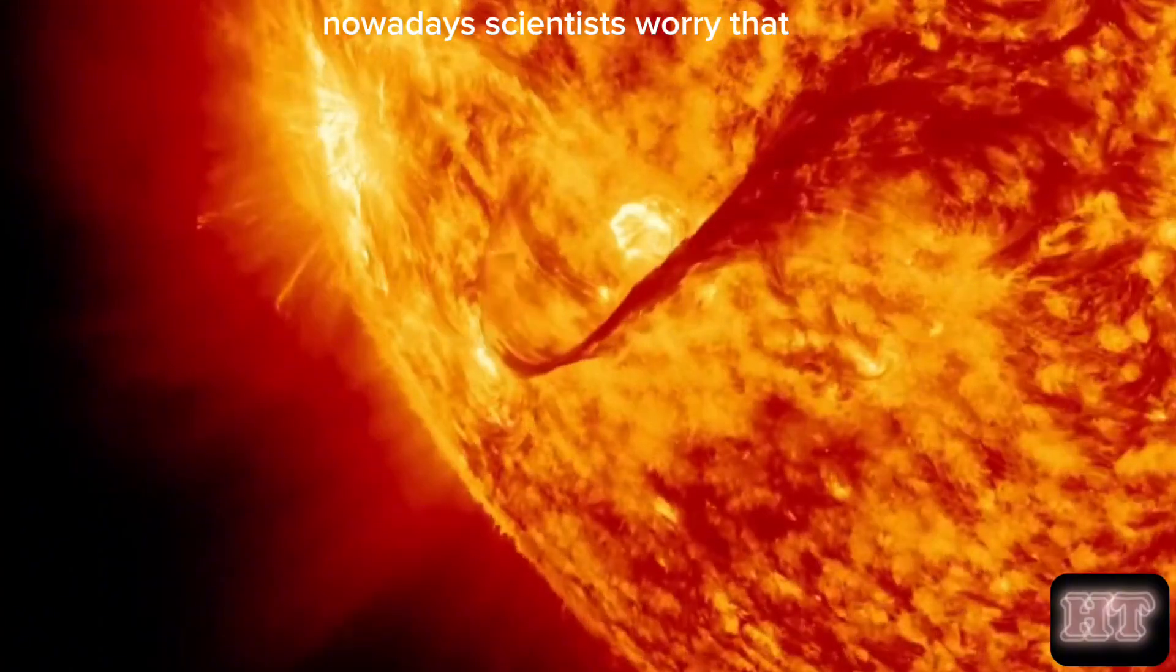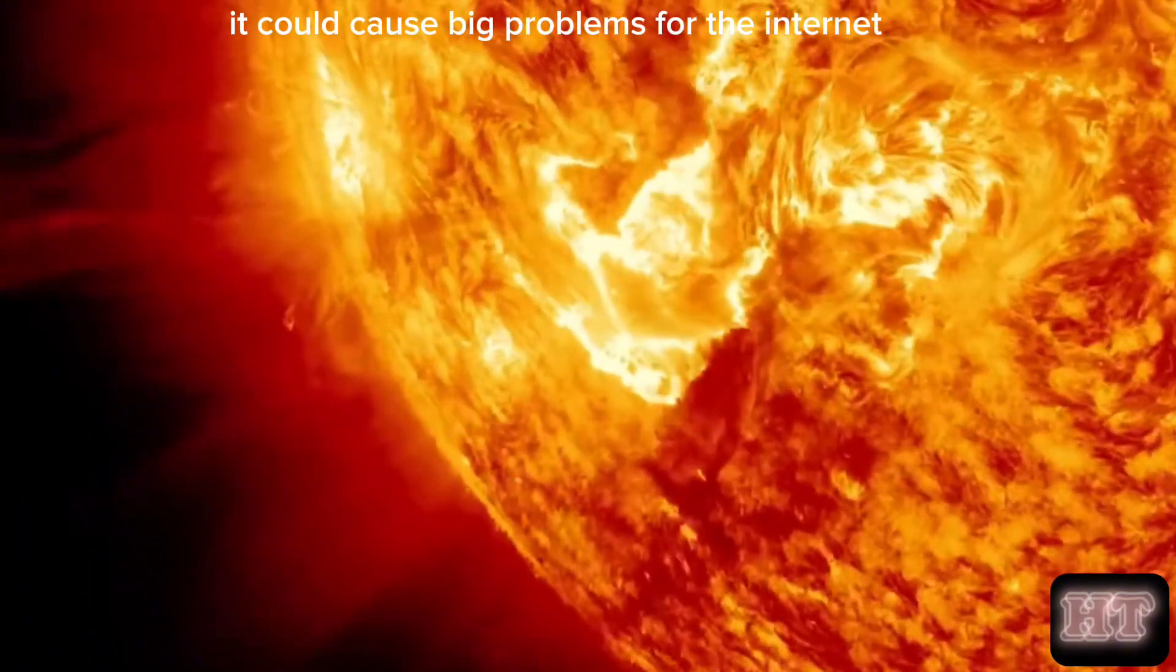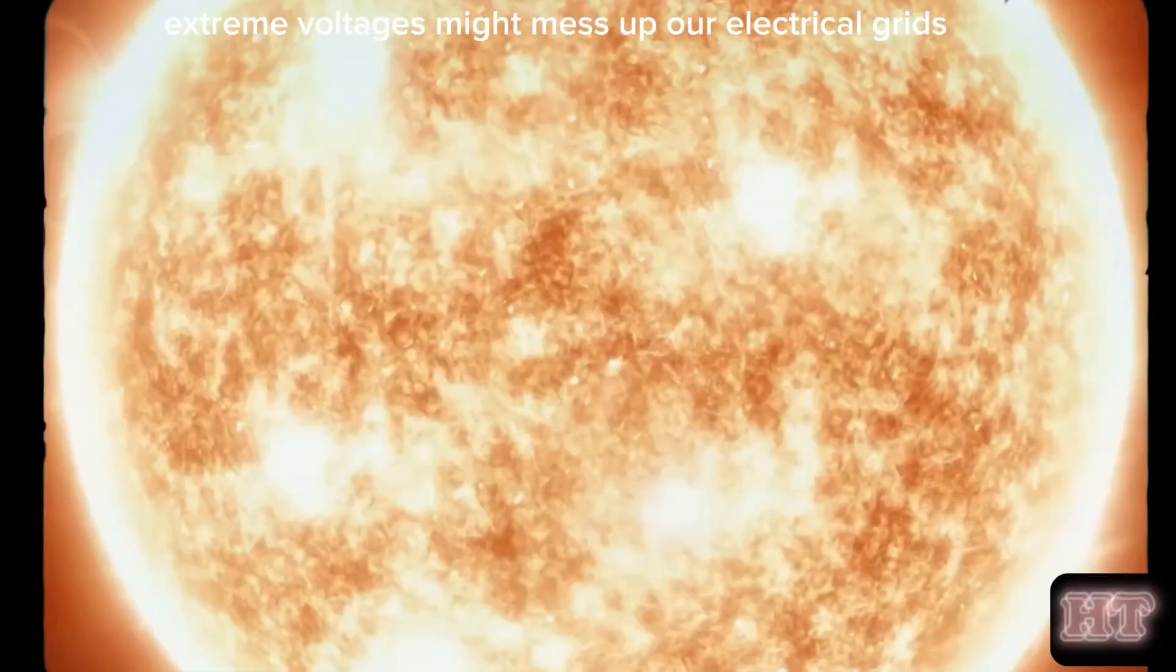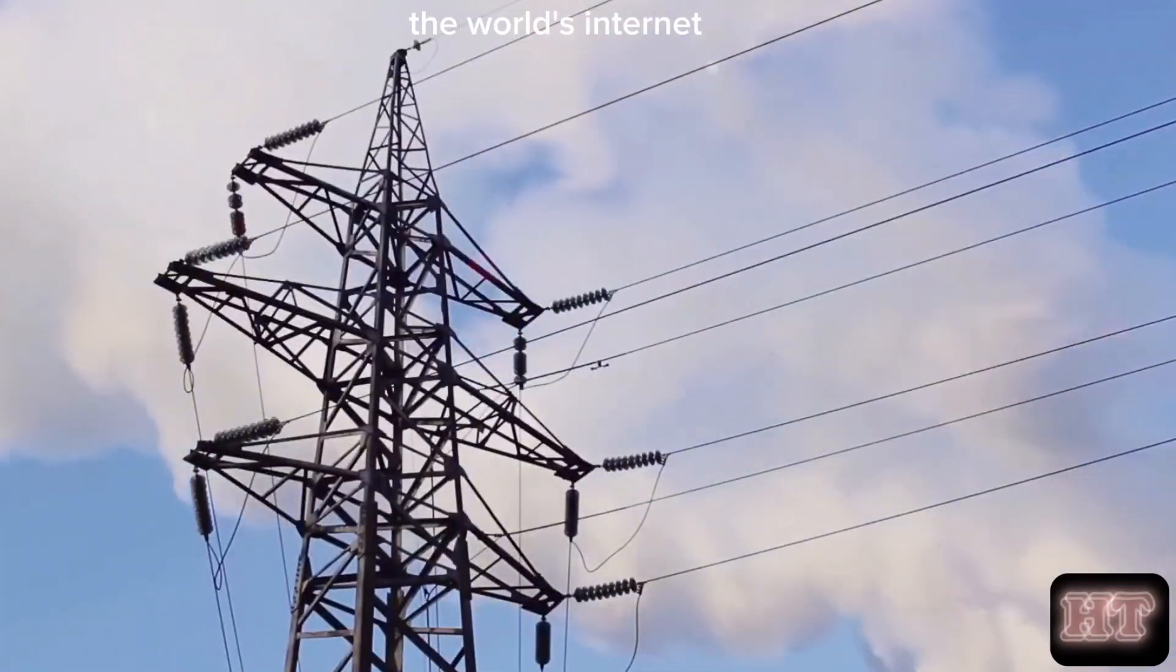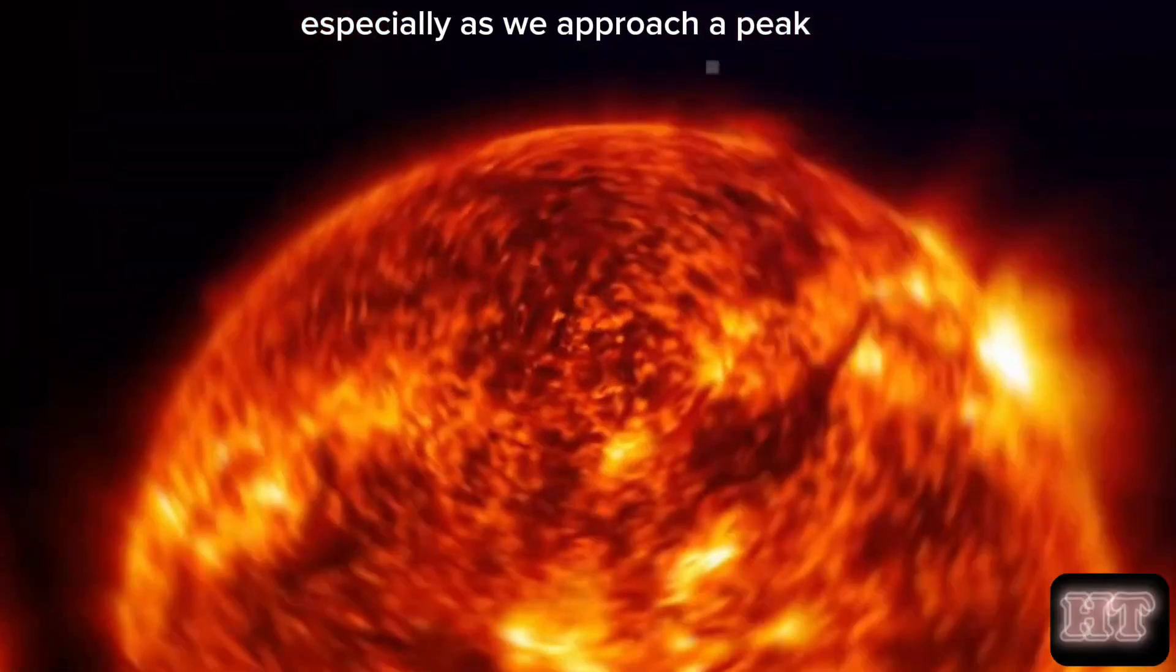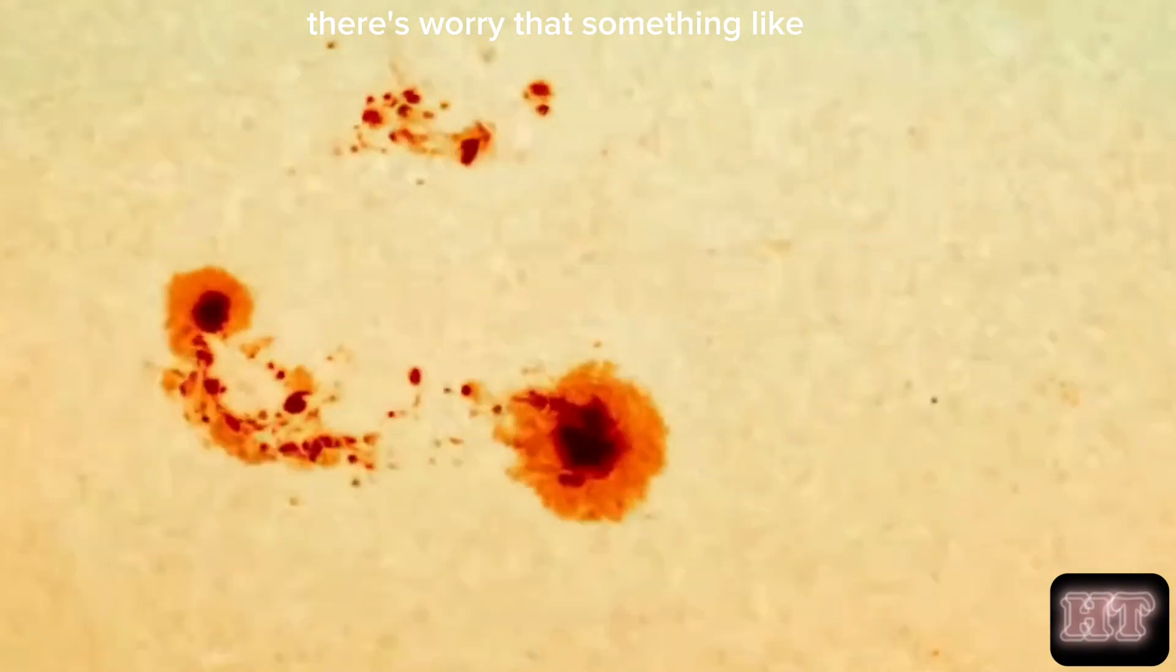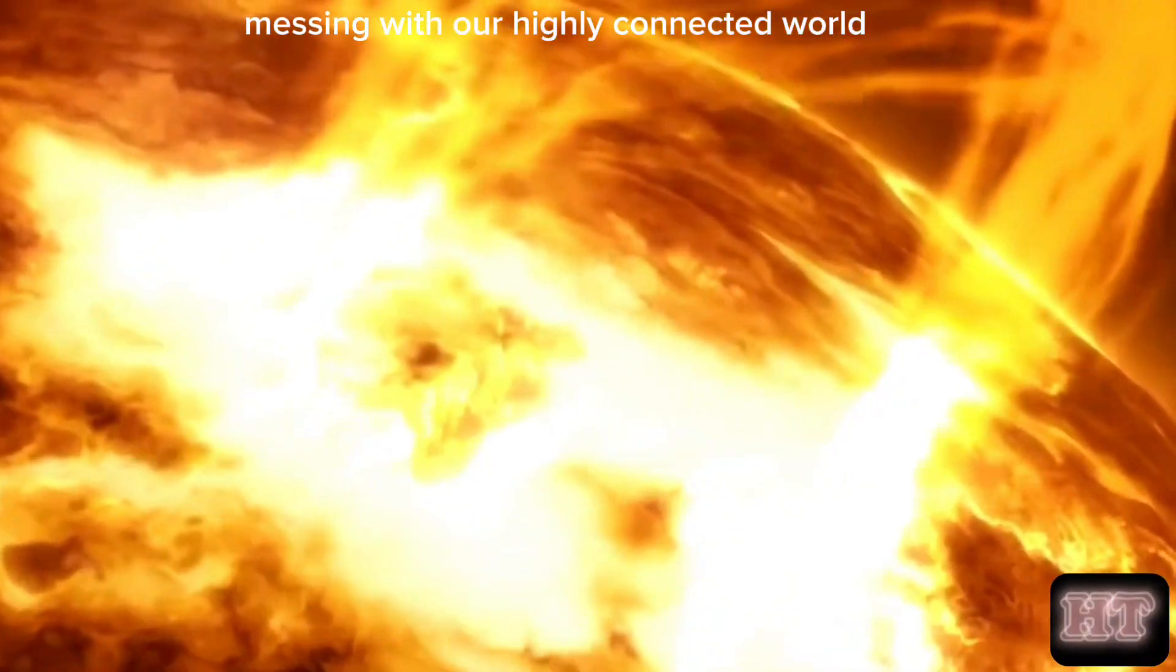Nowadays, scientists worry that if this happened again, it could cause big problems for the Internet. Extreme voltages might mess up our electrical grids, possibly damaging undersea cables that power a lot of the world's Internet. People are talking online about the chance of this happening again, especially as we approach a peak period of solar activity in 2024. There's worry that something like the Carrington Event could happen next year, messing with our highly connected world.